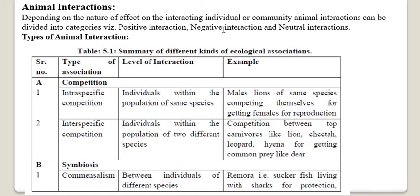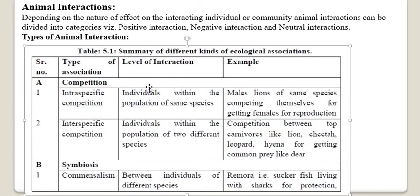Now let's see the different types of animal interaction depending upon the level of their association, along with examples. The first type of association is competition, which comes under negative interaction. Intraspecific competition — 'intra' meaning within — means competition within the same species.